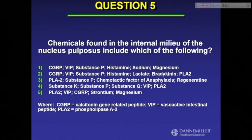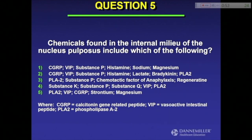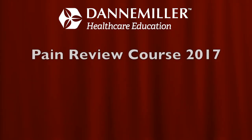Chemicals that are found in the internal milieu of the nucleus pulposus include which of the following? This is a little bit of an index about what these letters stand for: CGRP, VIP, Substance P. Wow, 95% — that's fantastic. The reason I highlighted that on three separate occasions is because it typically appears in one form or another on examination, and also because of the immense influence of phospholipase A2.